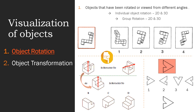So we have to see if this object is rotated in that direction and check the options. Option B is not in the same direction. Option D — yes, D is the same direction and it is matching with the condition. The answer is D. This is the second type of question that can be asked in object rotation.